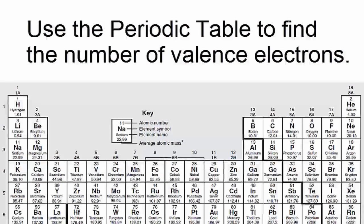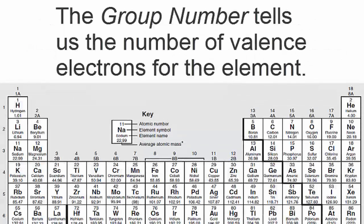We can find the number of valence electrons using the periodic table. The group number tells us the number of valence electrons for the element.